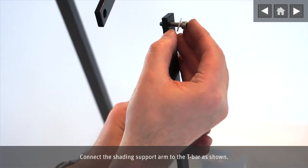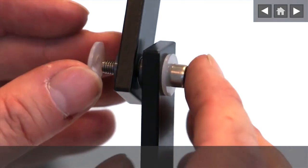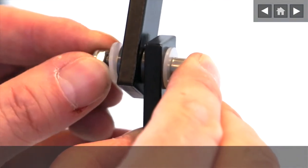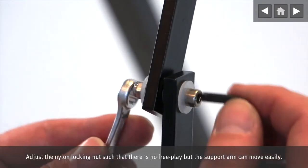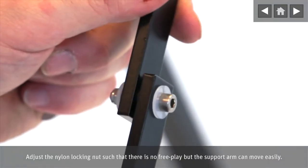Connect the shading support arm to the T-bar as shown. Adjust the nylon locking nut such that there is no free play but the support arm can move easily.